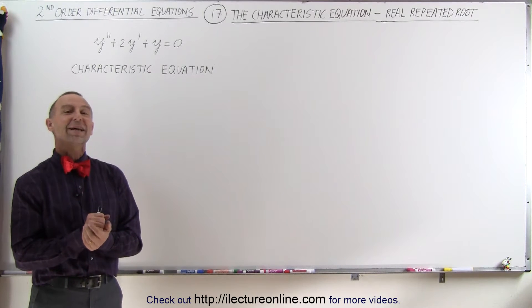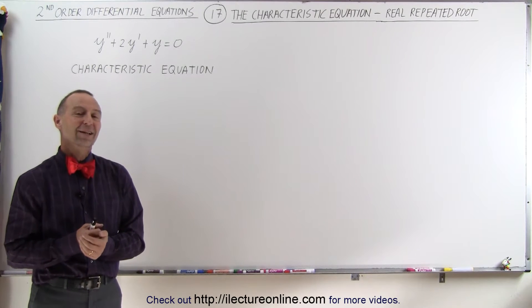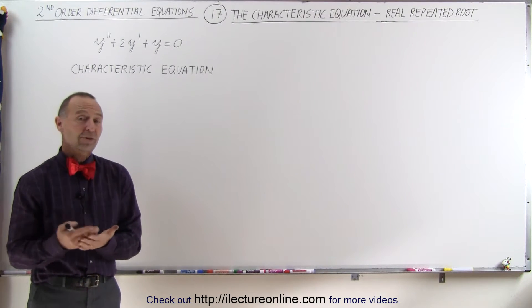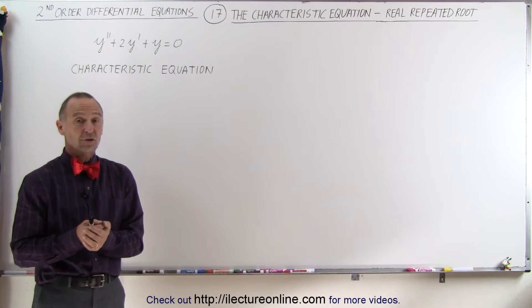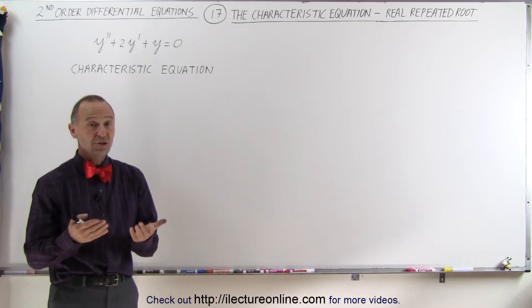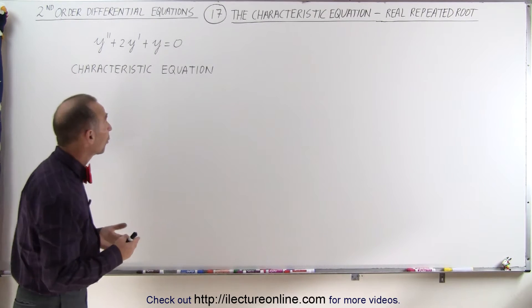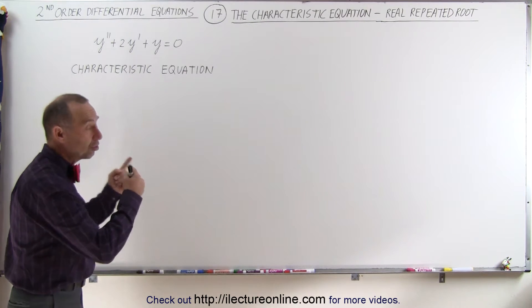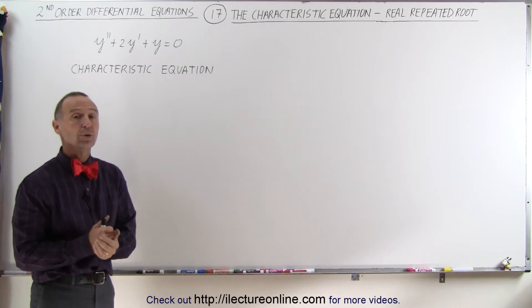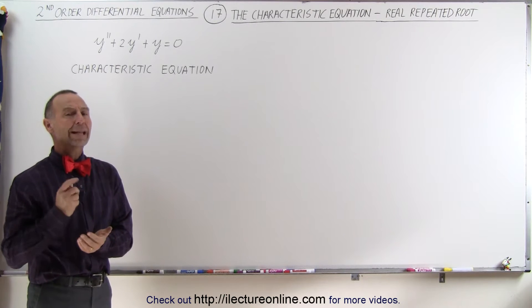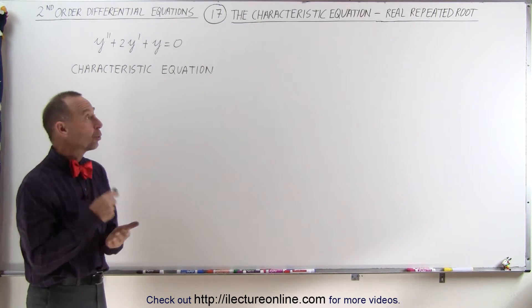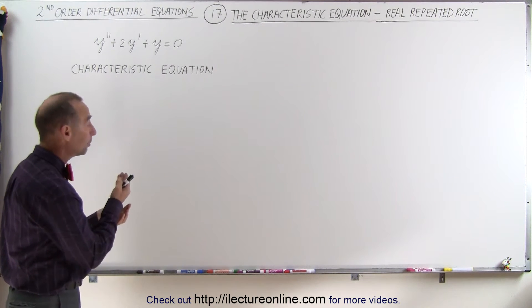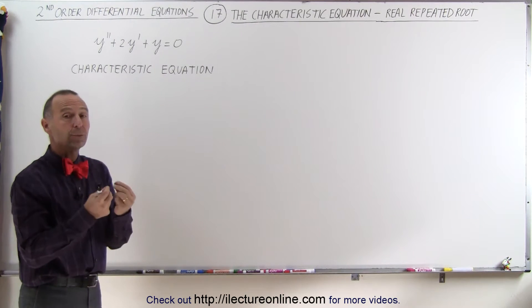Welcome to iLecturnLine. So far we've used a characteristic equation to solve homogeneous differential equations that had two distinct real roots. What happens when the equation has real but repeated roots?